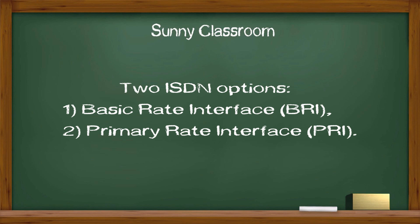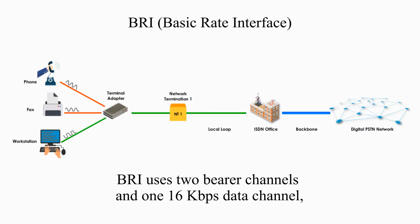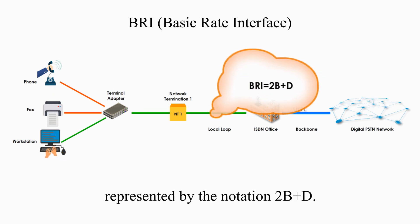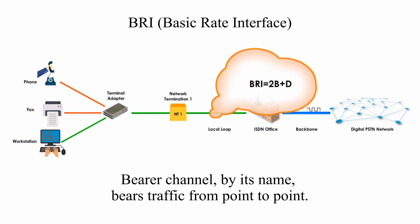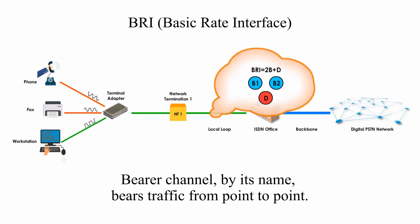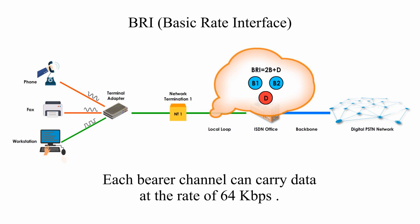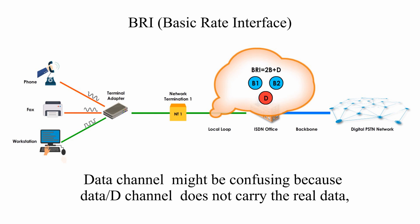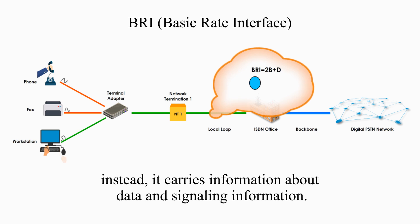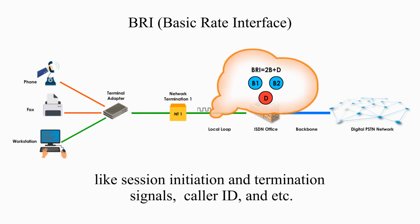There are two ISDN options: Basic Rate Interface, or BRI, and Primary Rate Interface, or PRI. BRI uses two bearer channels and one 16 kbps data channel, represented by the notation 2B+D. A bearer channel, by its name, bears traffic from point to point and uses circuit switching methods to carry data. Each bearer channel can carry data at a rate of 64 kbps. The data channel, or D channel, does not carry the real data. Instead, it carries information about the data and signaling information — for example, session initiation and termination signals, caller ID, etc.